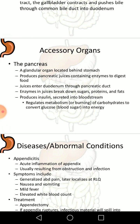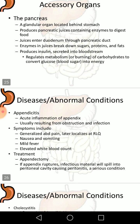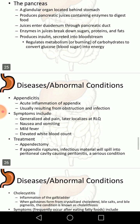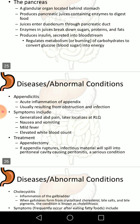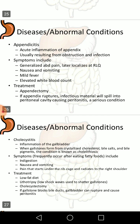The pancreas is a glandular organ located behind the stomach. It produces pancreatic juices containing enzymes to digest food, which enter the duodenum through the pancreatic duct. Enzymes in these juices break down sugars, proteins, and fats. The pancreas also produces insulin that is secreted into the bloodstream and is very important for maintaining glucose levels.